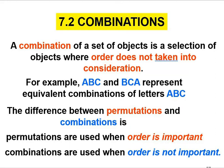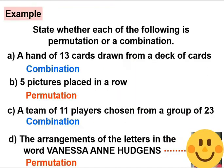Let's look at an example. State whether each of the following is permutation or a combination. For a, a hand of 13 cards drawn from a deck of cards. It is a combination because the order of the cards is not important. For b, 5 pictures placed in a row. It is permutation because the order is important when we want to place in a row.